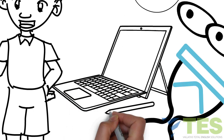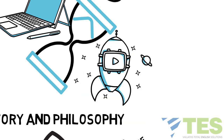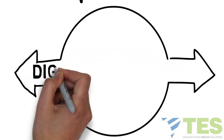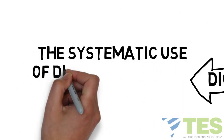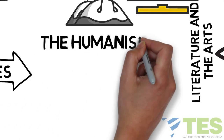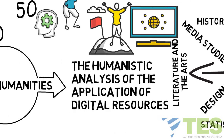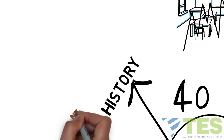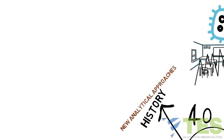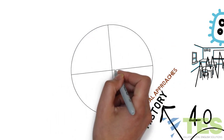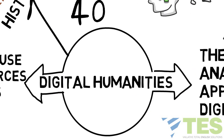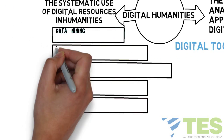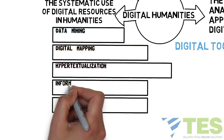In digital humanities, technology and science are no longer two separate disciplines — they are two sides of the same approach. Digital humanities is a two-way approach: the systematic use of digital resources in humanities, and the humanistic analysis of the application of digital resources. For example, take the discipline of history. A digital humanities approach to history involves developing new analytical approaches regarding creation, documentation, preservation, curation, and so on, and developing digital tools for data mining, data mapping, hypertextualization, information retrieval, and visualization.